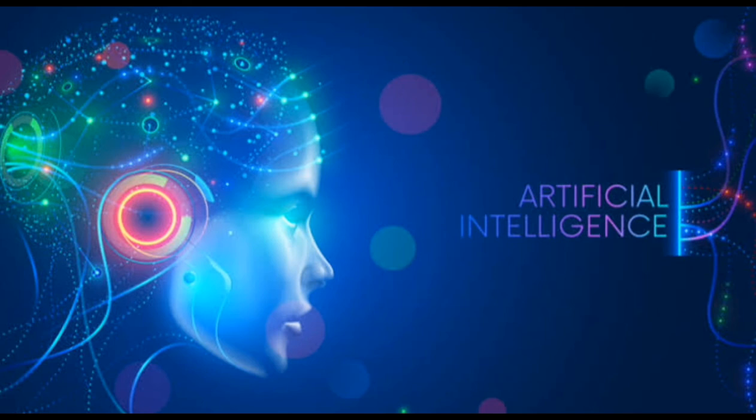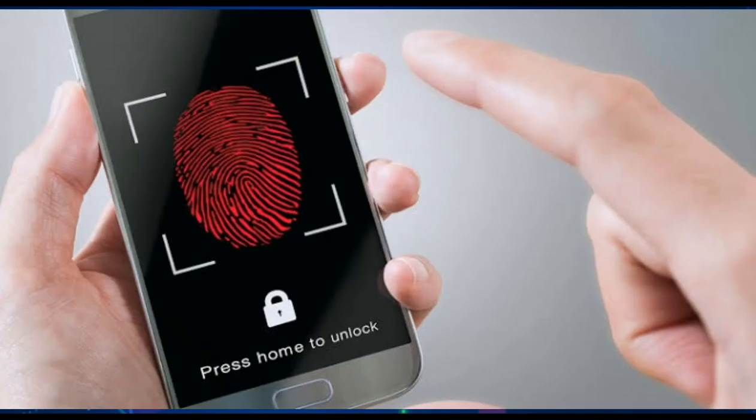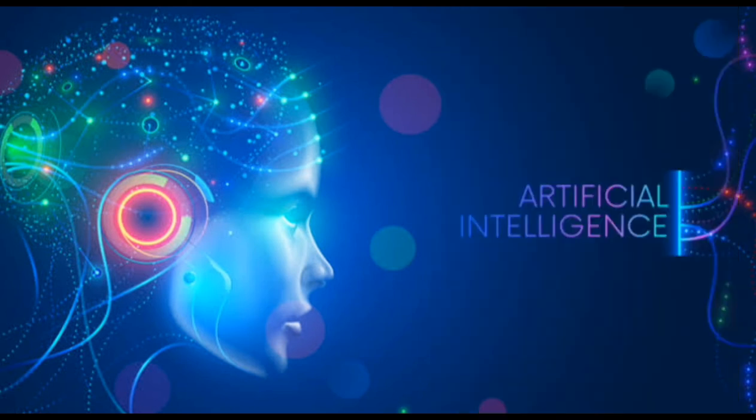We have many more sectors in artificial intelligence. For example, smartphones nowadays have patterns. You can use lock patterns, thumb impressions. Sometimes when taking photographs, once you smile, it will detect your smile and click your photograph. In many more places we can see artificial intelligence is used.